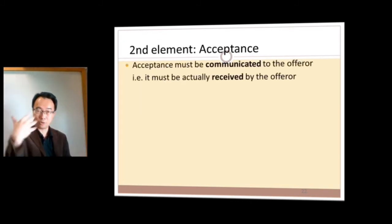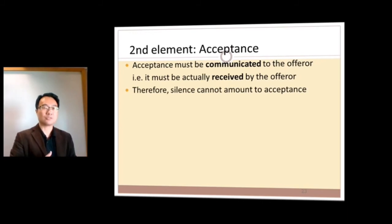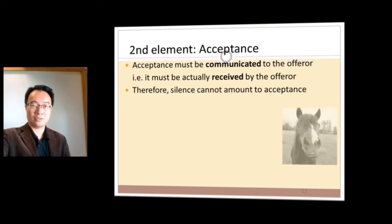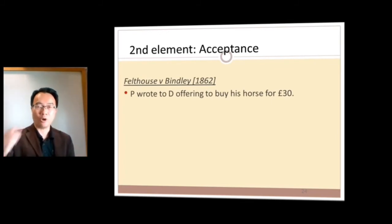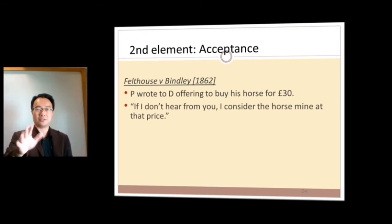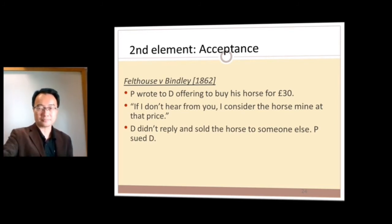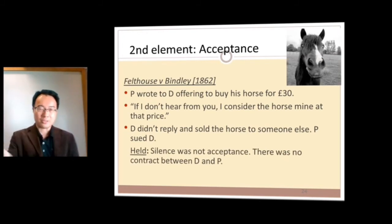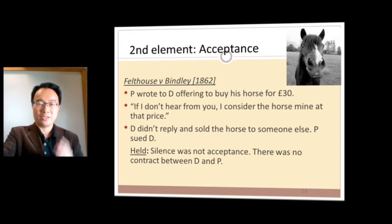You must communicate your acceptance to the offeror. There is no such thing as 'silence is consent' in contract law. In the case of Felthouse v Bindley, an uncle wrote to his nephew offering to buy his horse for £30, saying 'if I don't hear from you, I consider the horse mine.' The nephew didn't reply and sold the horse to someone else. The court said silence cannot constitute acceptance — there was no contract, as there was no way the nephew intended to accept by not saying anything.